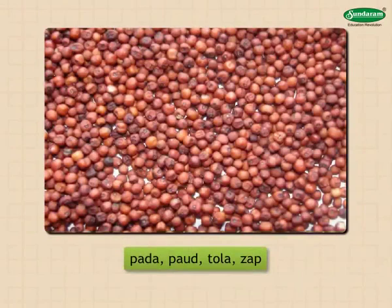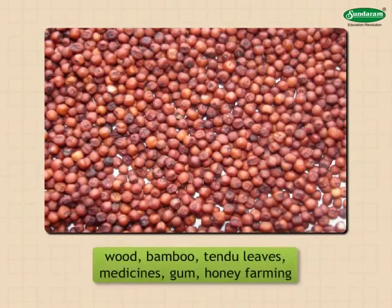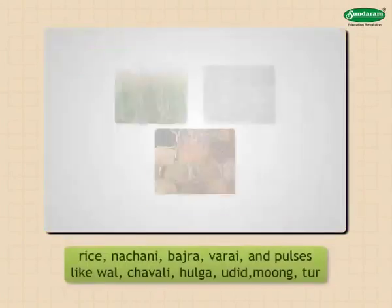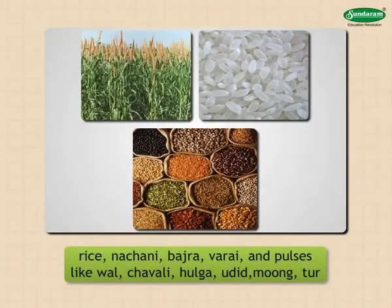Many Adivasis collect minor forest produce like wood, bamboo, tendu leaves, medicines, gum, honey, etc. Recently, some have started farming. Depending on availability, their diet includes rice, nachani, badra, varai, and pulses like wal, chowli, hulga, urid, moong, and toor.